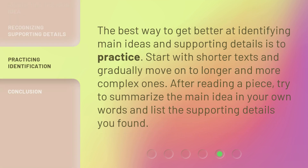The best way to get better at identifying main ideas and supporting details is to practice. Start with shorter texts and gradually move on to longer and more complex ones. After reading a piece, try to summarize the main idea in your own words and list the supporting details you found.